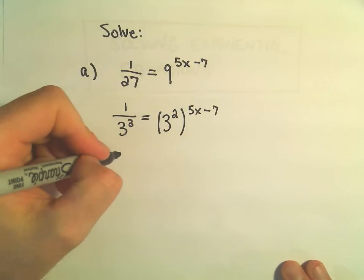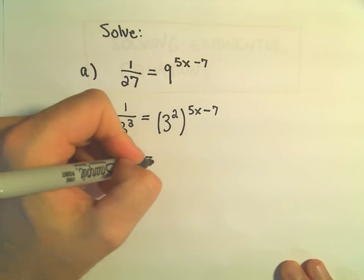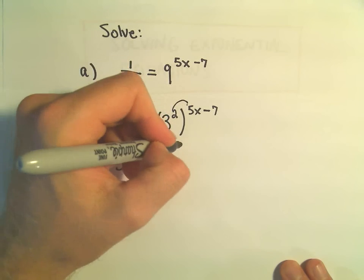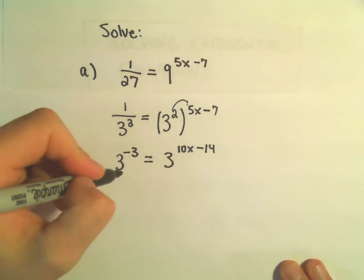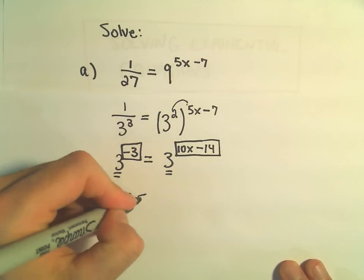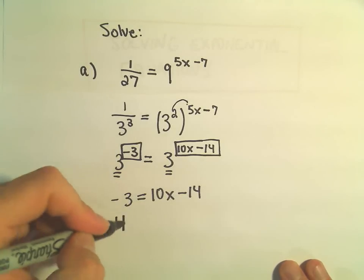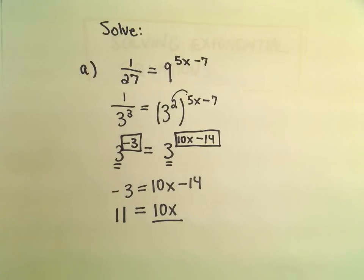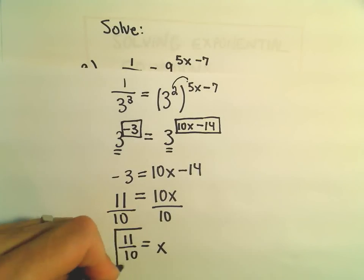On the left side, I'm going to bring my denominator upstairs by writing it as 3 to the negative third. On the right side, since these are in parentheses, we multiply: 2 times 5x would be 10x, 2 times negative 7 would be negative 14. Now since we have like bases, we can set the exponents equal: negative 3 equals 10x minus 14. Add 14 to both sides to get 11 equals 10x, then divide both sides by 10, giving x equals 11 over 10.